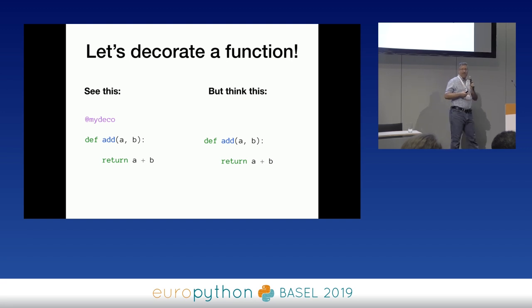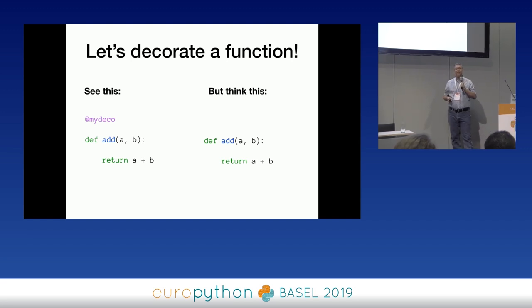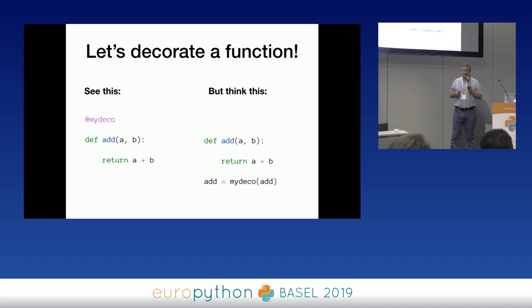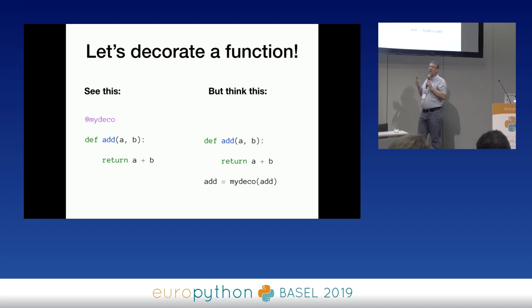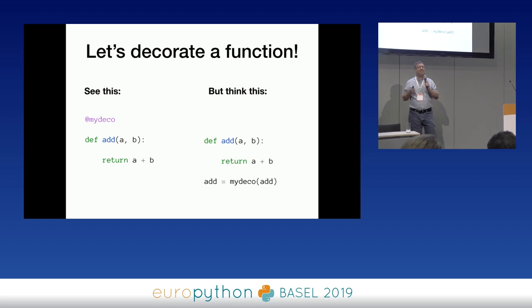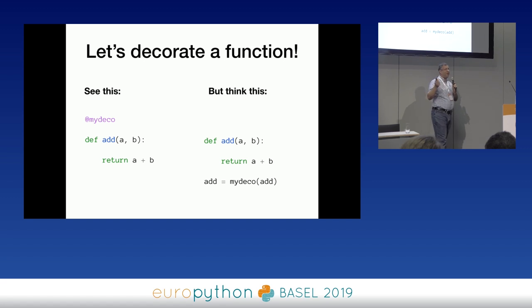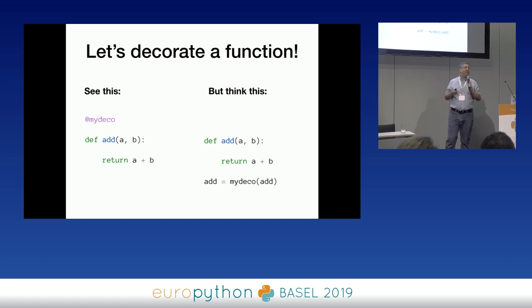Both things are happening. So when we decorate this function, another step occurs: after we define our function, we are calling my_deco with an argument of add, and the result of that is being assigned back to add. This means we've got a few different functions running around here. Functions — or classes for that matter — are known in the Python world as callables.